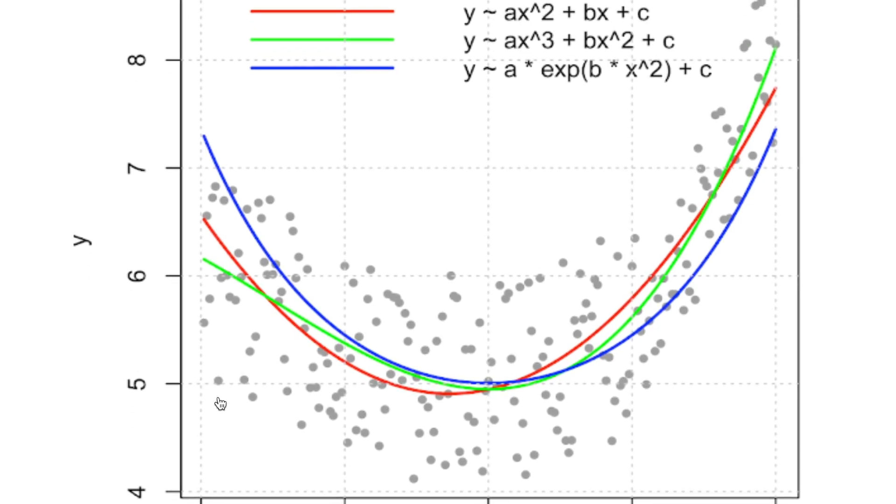The plot shows that there are slight differences between each fitting model. That means you can change or add other functions to achieve better results based on the characteristics of your input data.